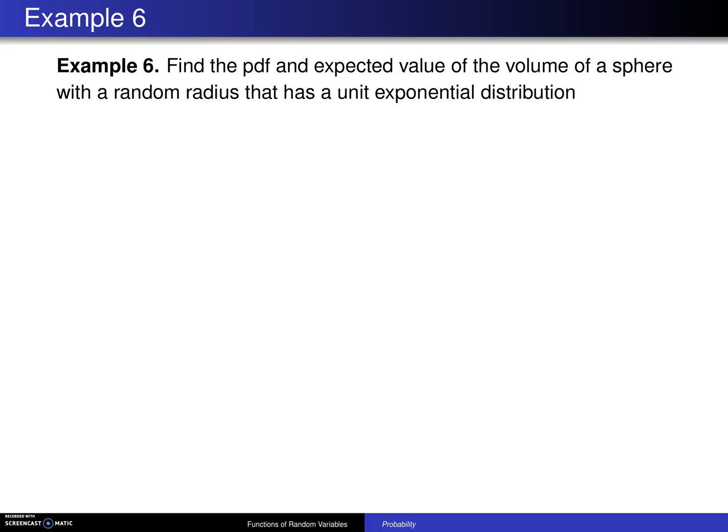Here is an example of using the transformation technique to find the distribution of a continuous random variable Y as a function of a continuous random variable X. Find the probability density function and expected value of the volume of a sphere with a random radius that has a unit exponential distribution. Well, the first step is to define the random variable X, and in this particular case X will be the radius.